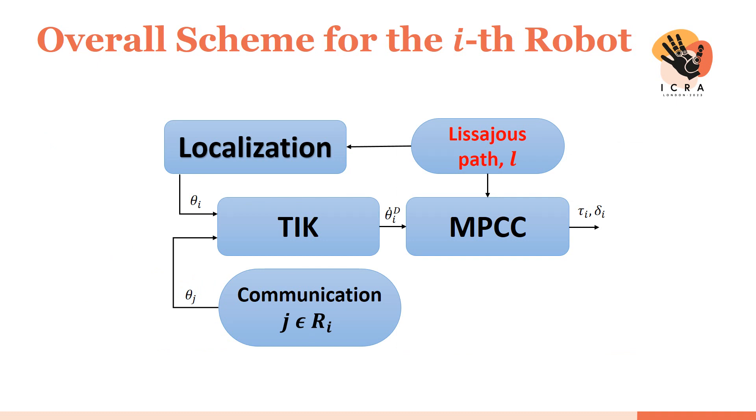This is the overall scheme for the ith robot. A desired Lissajous curve is selected. The localization module extracts the ith robot state theta i. The time-inverted Kuramoto dynamics on the basis of the theta i and theta j computes the desired theta i dot. And finally, the MPCC computes the control inputs tau i and delta i.